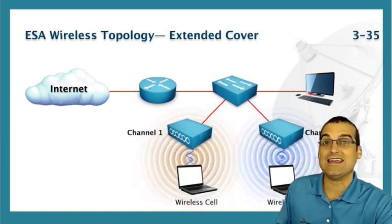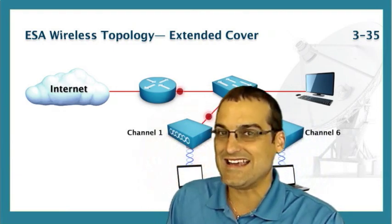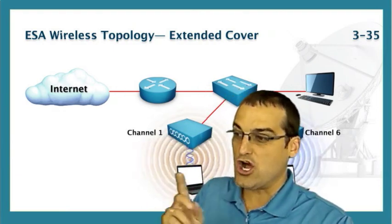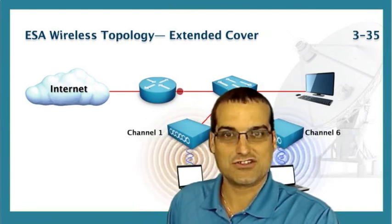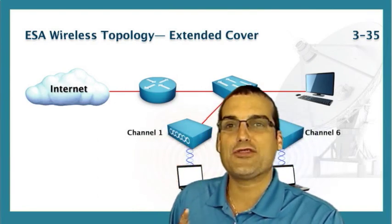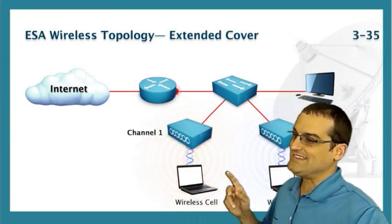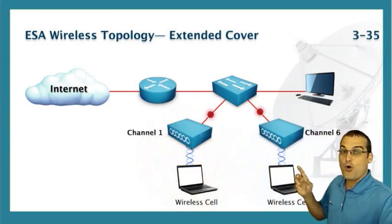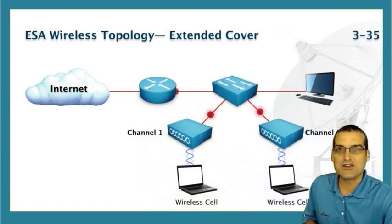Step two is to name the SSID for these two cells identically, so you'll have non-overlapping channels and identical service set identifiers. Step three: make sure you give yourself at least a 30 percent overlap with those two cells. This allows your users to seamlessly move from one cell to the next without losing signal.